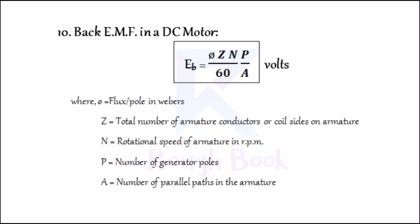Number ten: Back EMF in a DC motor. When the armature of the DC shunt motor starts rotating, dynamically induced EMF is produced in the armature conductors. The direction of this induced EMF opposes the applied voltage. This induced EMF is known as back EMF, EB. It is given by EB = (φ × Z × N / 60) × (P / A) in volts, where φ is flux per pole in Webers, Z is the total number of armature conductors or coil sides on armature, A is the number of parallel paths in armature, P is the number of generator poles, and N is the rotational speed of armature in RPM.